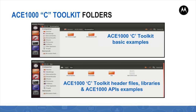The HelloWorldExample subfolder demonstrates using the VM to build and compile applications with standard Linux libraries only. The ERRMessageExample subfolder demonstrates using the VM to build and compile applications using additional APIs from the C toolkit library. The long run includes the ACE1000 C toolkit header files, ACE1000 system libraries, and ACE1000 toolkit APIs examples. We offer a separate webinar that covers the ACE1000 C toolkit APIs and a short tutorial that shows how to build a simple C application for the ACE1000.